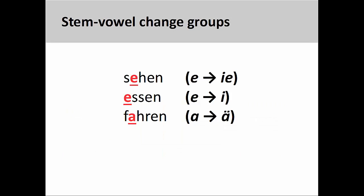A common characteristic of many irregular and strong verbs is a stem-vowel change in the second- and third-person singular. The majority of these verbs can be arranged into just a few groups. One group has a stem-vowel that changes from e to ie, another from e to i, and another from a to a-umlaut. The difficult part is knowing whether a verb has a stem-vowel change — this simply must be memorized.